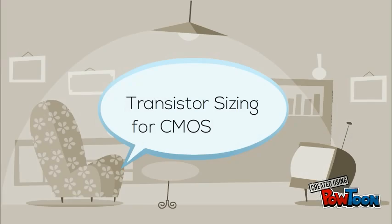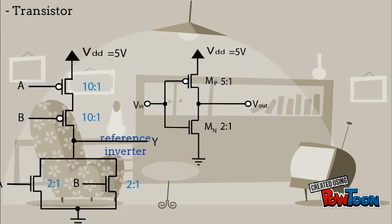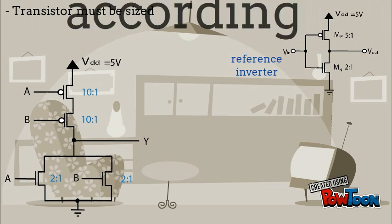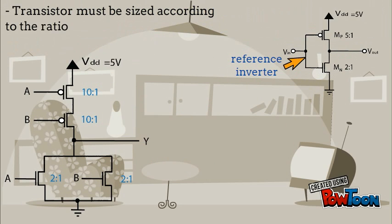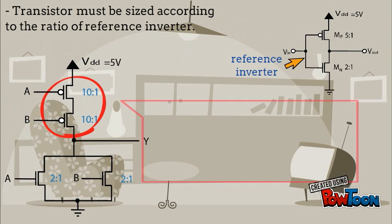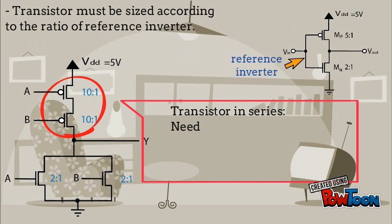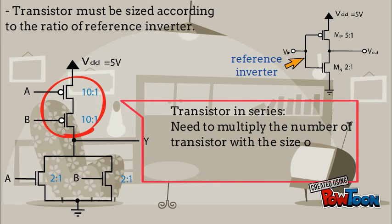Transistor sizing for CMOS NOR: transistors must be sized according to the ratio of the reference inverter. Transistors in series need to multiply the number of transistors by the size of the reference inverter.